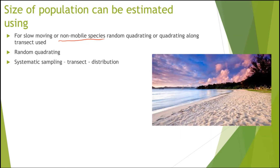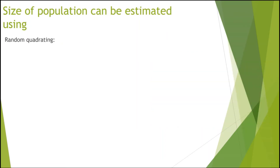Quadratting along a transect is used to measure the distribution of a species. For example, if we wanted to know how the number of rocks changes as we move further from the sea, that's when we would use systematic sampling, which is different from random sampling.